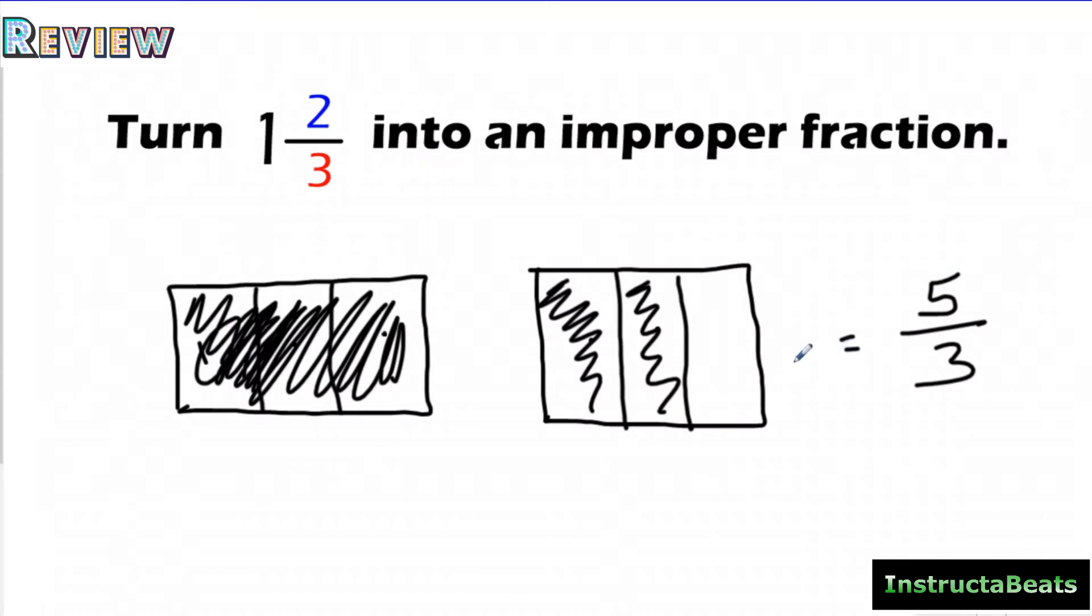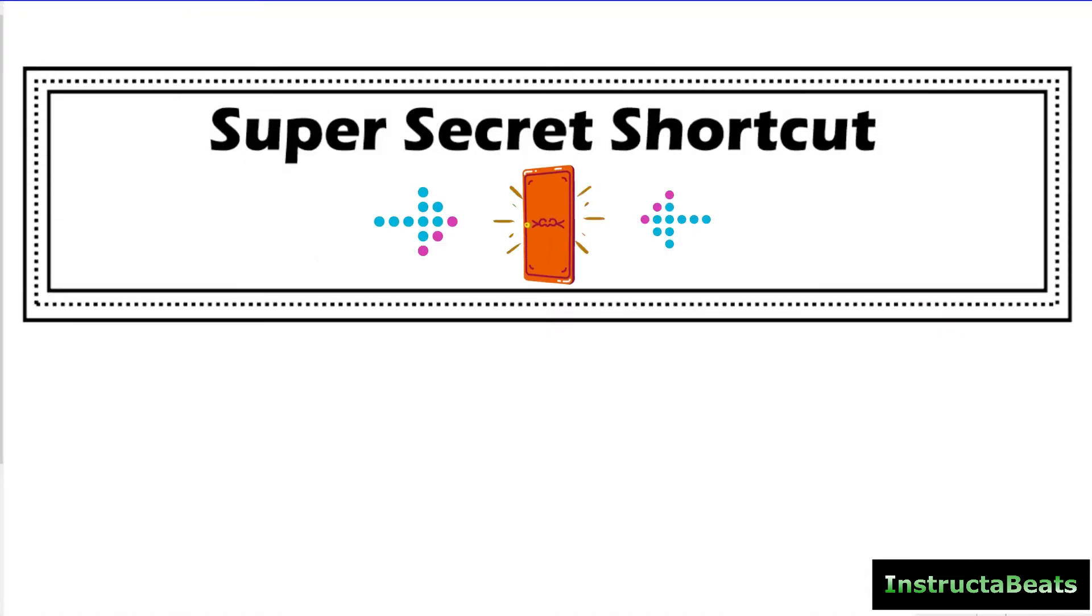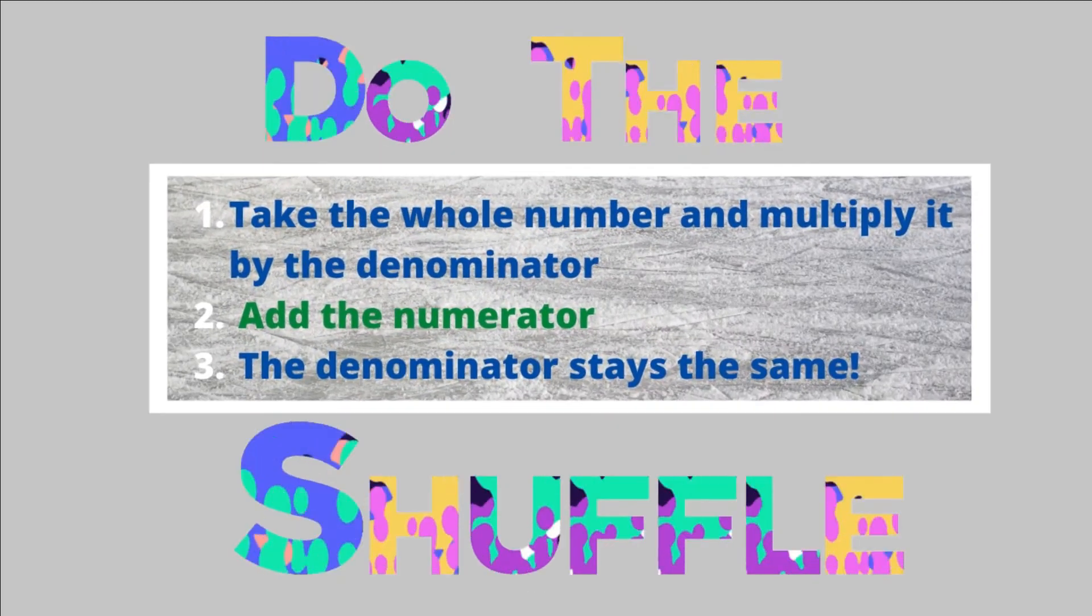So that's a long way, right? And it's not bad when the whole number is 1, but what if the whole number is like 14? You don't want to draw out 14 wholes, so there's got to be a faster way. And in fact, there is. We have a super secret shortcut right through this door that's going to make this easy and quick. So let's open the door and check out our steps.